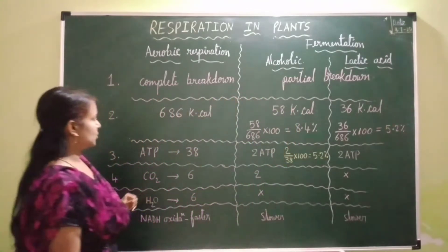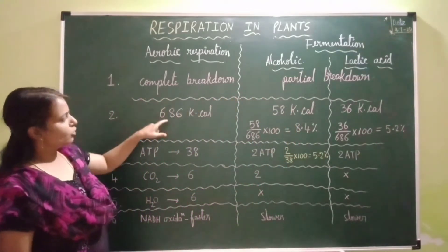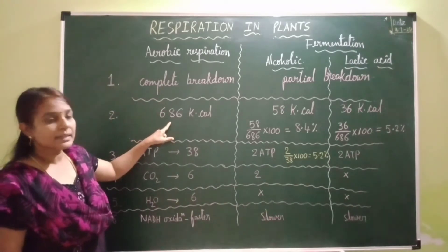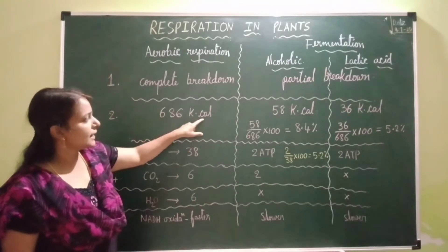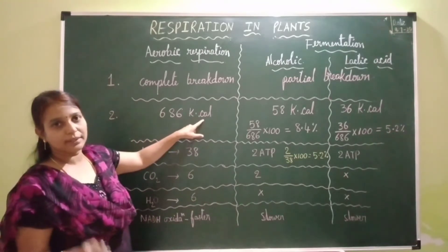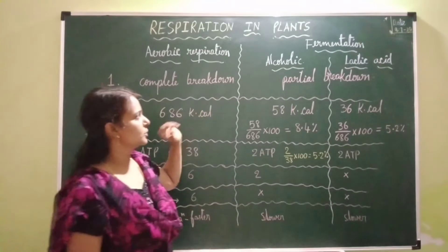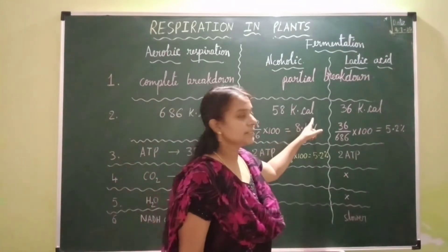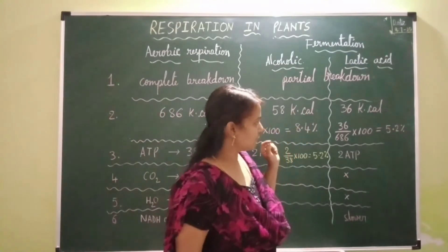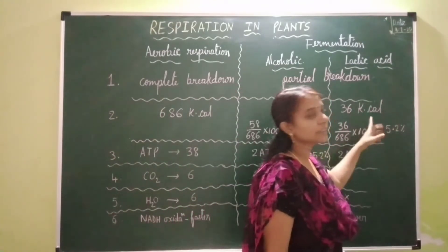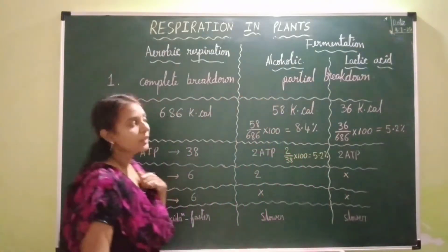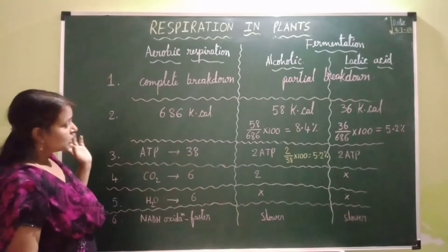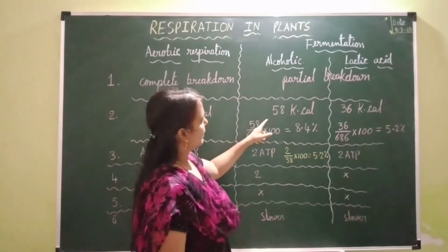By the complete breakdown of food, a large amount of energy is released during aerobic respiration — that is 686 kilocalories of energy is released by the breakdown of one molecule of glucose. Whereas in alcoholic fermentation, 58 kilocalories of energy is released, and in lactic acid fermentation, 36 kilocalories of energy is released.